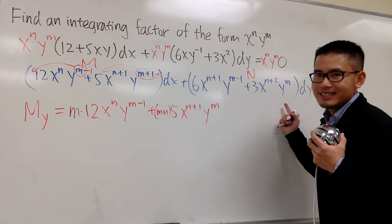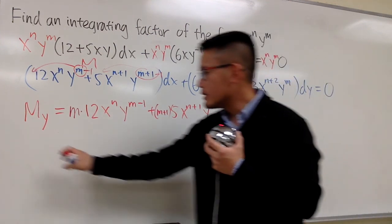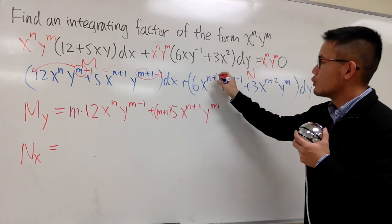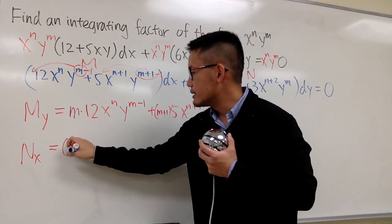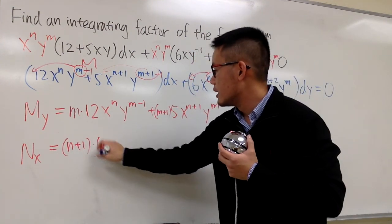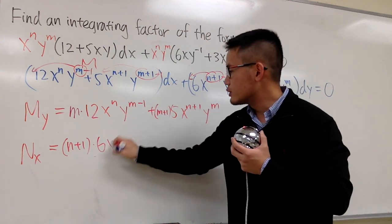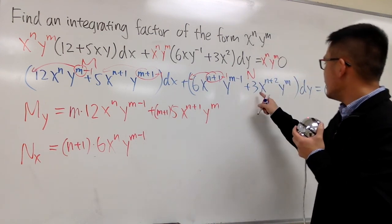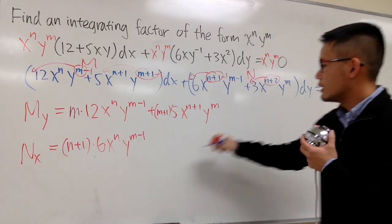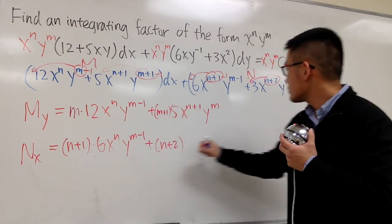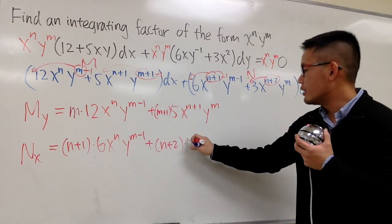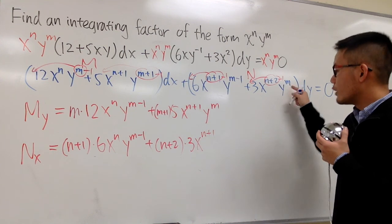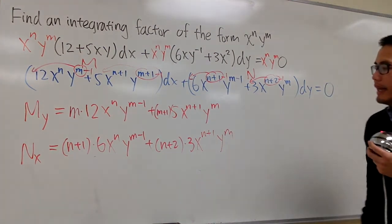Now for N sub x — the partial of N with respect to x. For the first term, x to the n plus 1 is the variable, so we bring (n plus 1) to the front times 6, and subtract 1 from the power, giving x to the n, with y to the n minus 1. Next, we bring (n plus 2) to the front times 3, subtract 1 from the power to get x to the n plus 1, and y to the n.